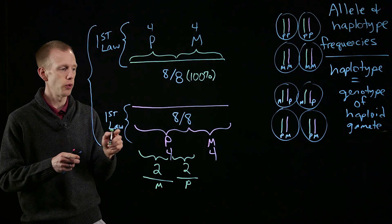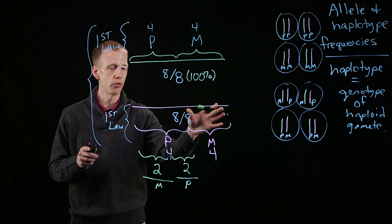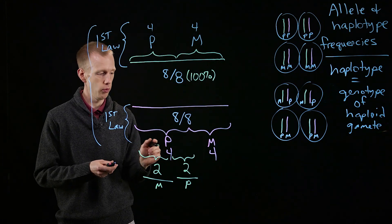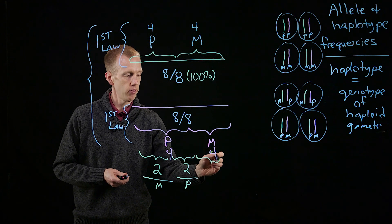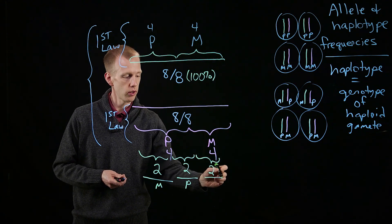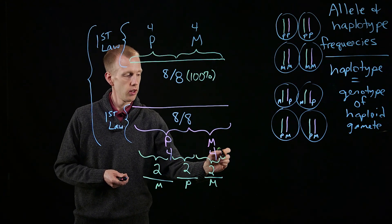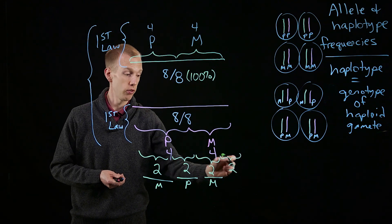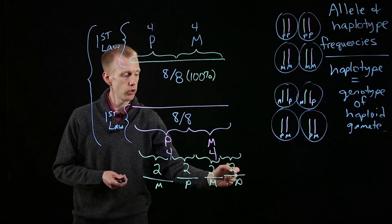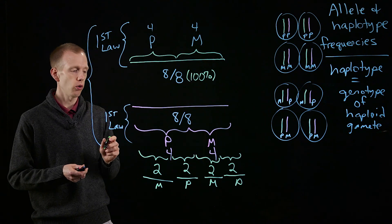And the same is true when we look at the gametes that have the maternal version of the pink chromosome. Half of them, or two, got the maternal version, and the other half, or two, got the paternal version of that green chromosome.